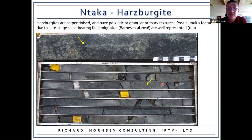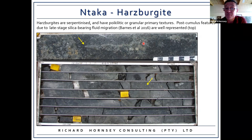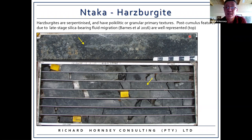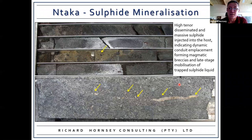The harzburgites are serpentinized with poikilitic textures or granular primary textures. Also visible are cross-cutting pyroxenite veins — late-stage magmatic features — indicating that the intrusion was emplaced, formed the poikilitic texture, was serpentinized, and then these veins formed later. These are related to late-stage fluid migration through the cumulate pile, and due to incorporation and melting of xenoliths these fluids are silica-rich, replacing olivine with pyroxene aggregates. We'll see this in several of the intrusions.